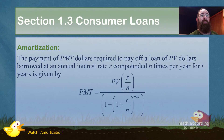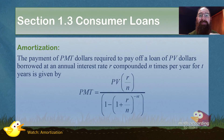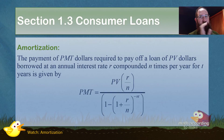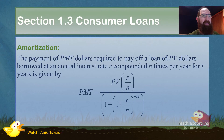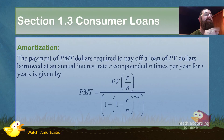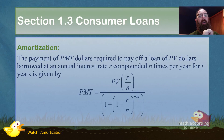We have one new letter in this formula. The payment of PMT dollars required to pay off the loan of PV dollars — PV stands for present value — borrowed at an annual interest rate lowercase r, compounded lowercase n times per year for lowercase t years is given by the formula. You don't have to memorize them, just know when to use them.